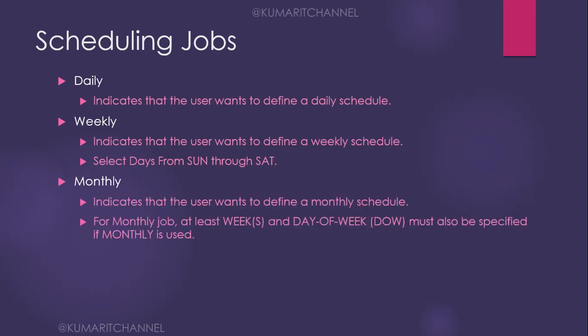Monthly scheduling indicates the user wants to define a monthly schedule; at least the week and day of week must be specified if monthly is used. There are also jobs that run annually — at the end of the year, maybe on 31st December or a specific day — for things like tax systems, profit and loss verification. Those annual jobs run for several hours because the data volume is much larger.